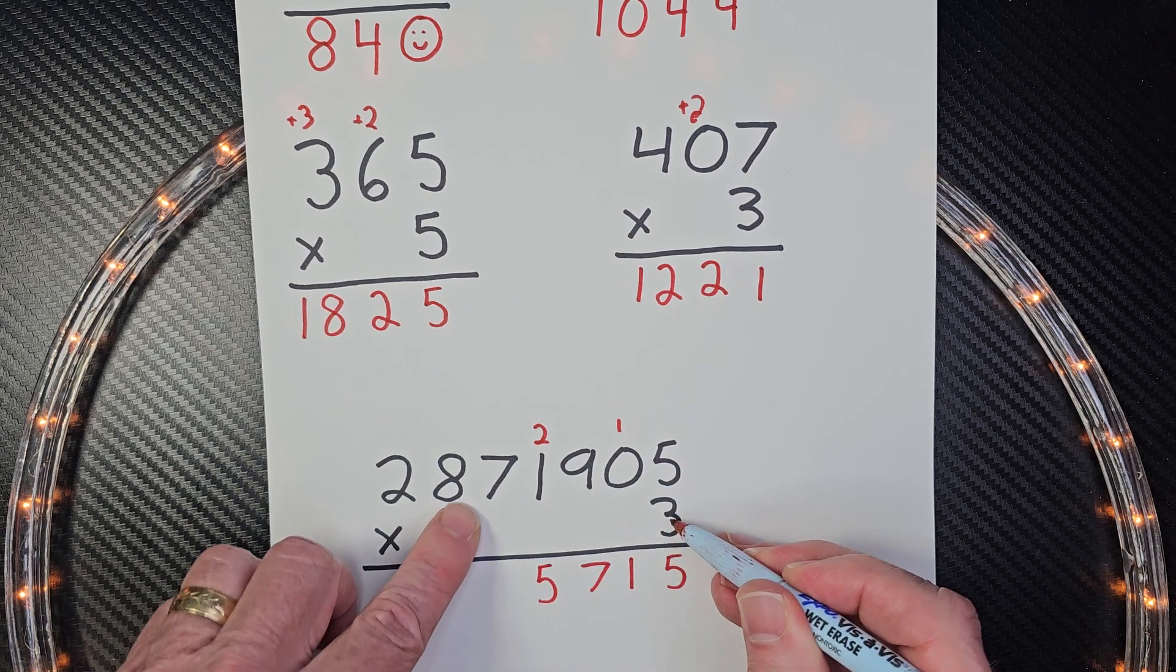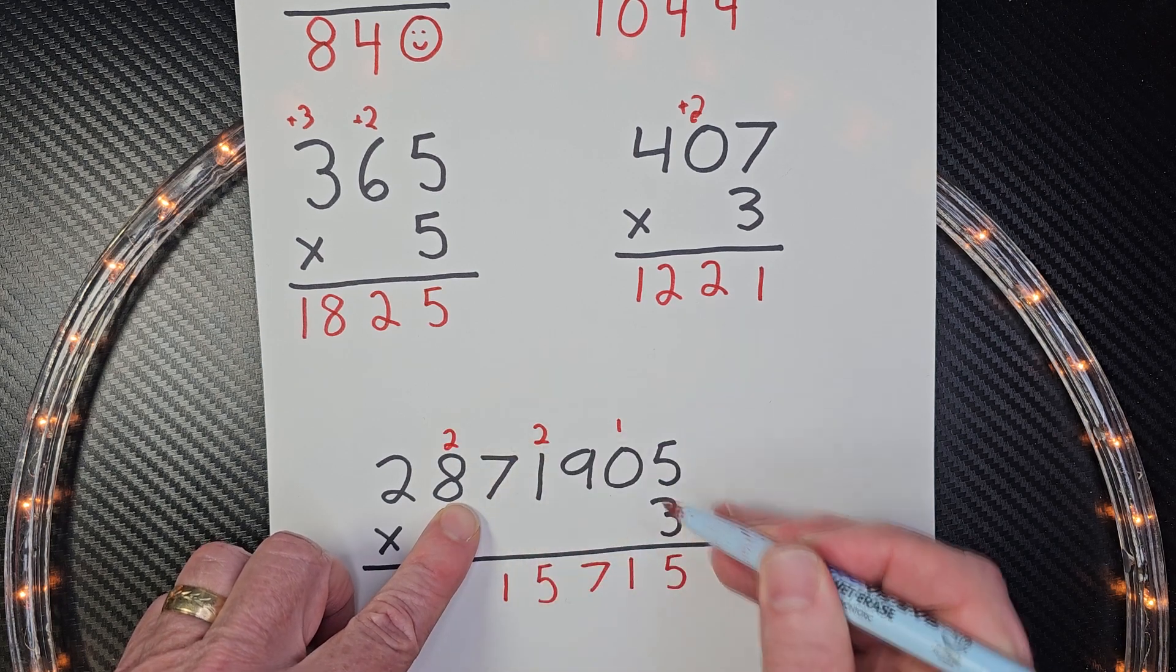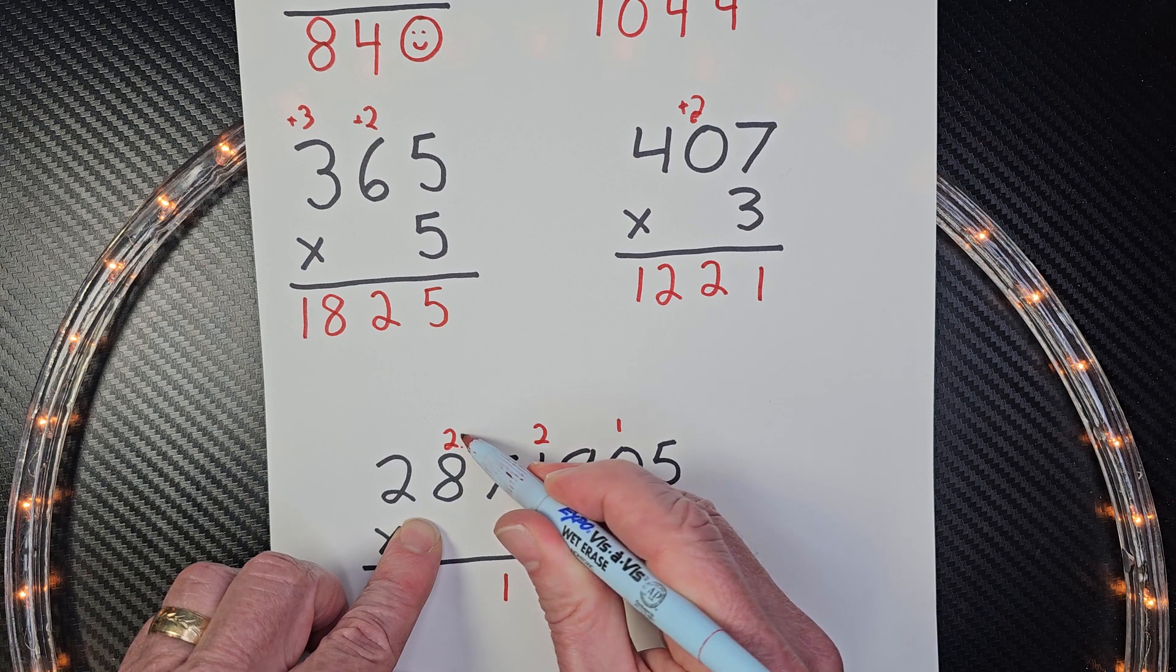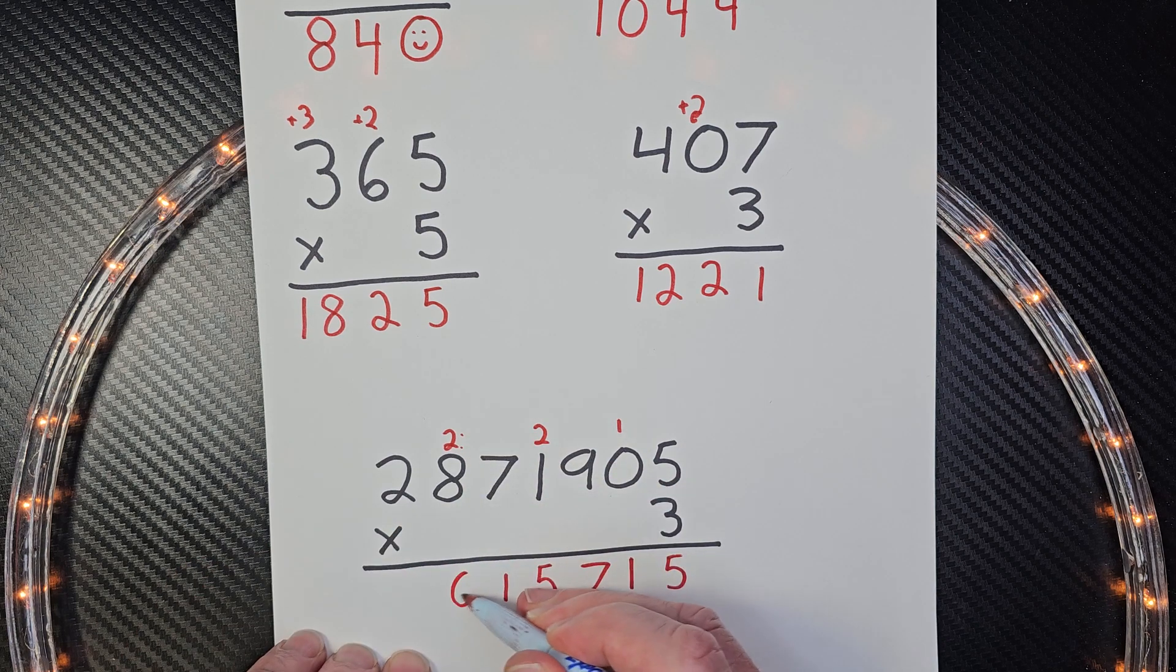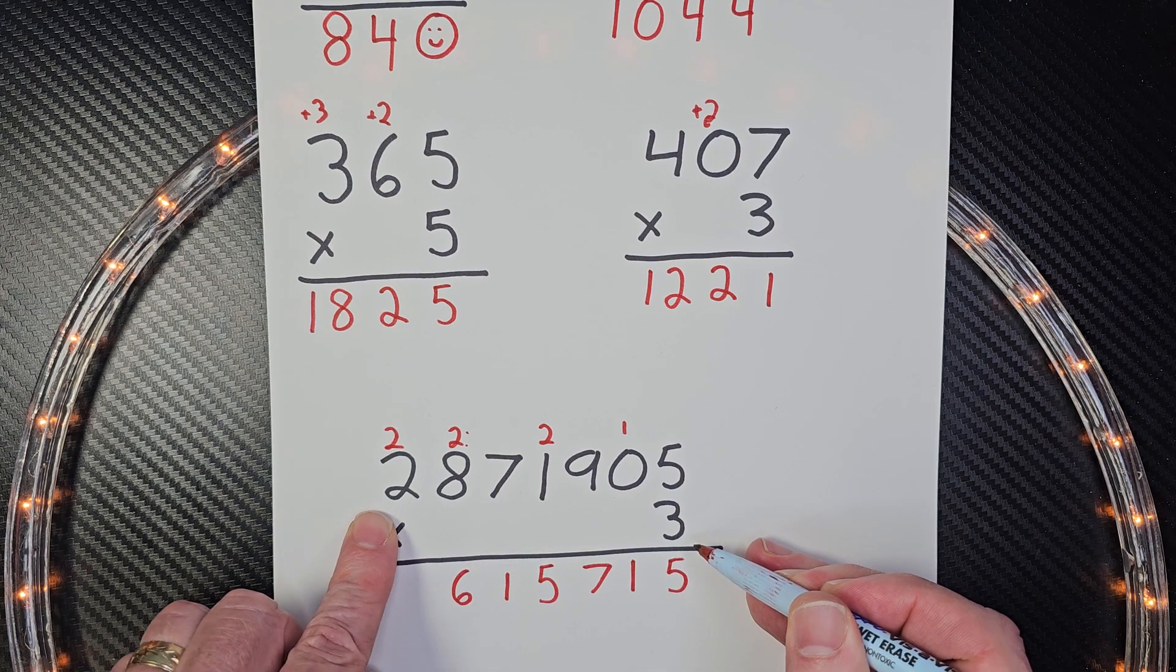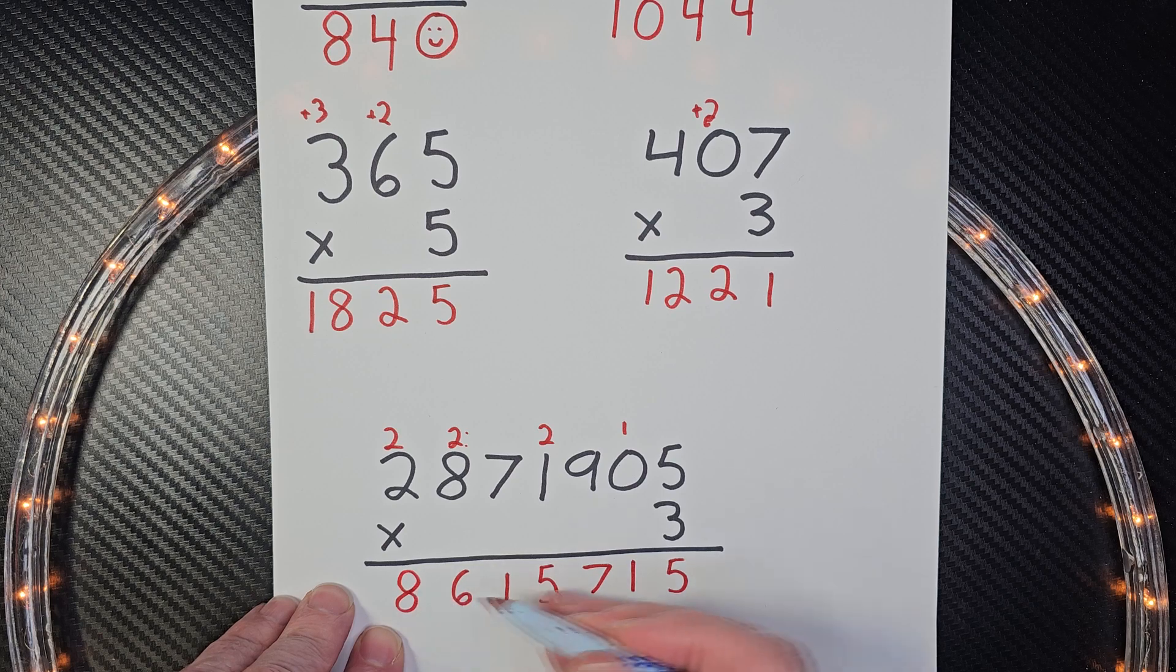Then we have three times seven is 21. Put the two over here. Three times eight is 24, 25, 26. Put the six here. The two up there. Three times two is six. Plus the two is eight. Don't be late eight.